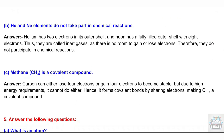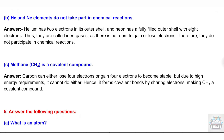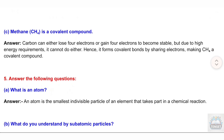C. Methane (CH₄) is a covalent compound. Answer: Carbon can either lose 4 electrons or gain 4 electrons to become stable, but due to high energy requirements, it cannot do either. Hence, it forms covalent bonds by sharing electrons, making CH₄ a covalent compound.